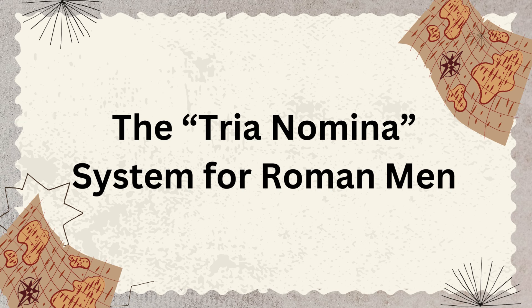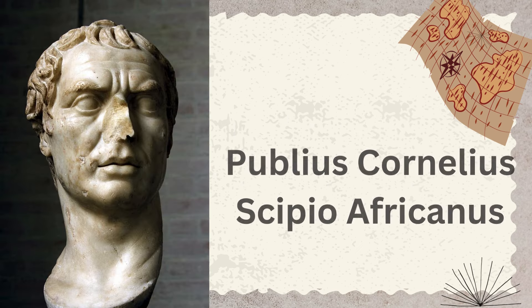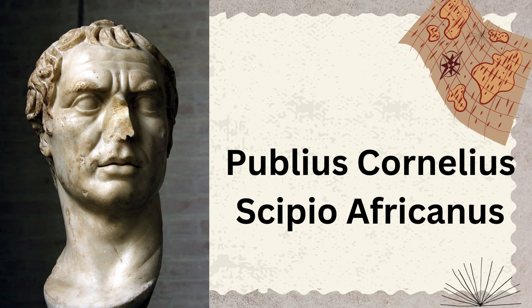Let's take that and look at a traditional Roman naming system, specifically for Roman men. This system is often called the tria nomina — the three name system. One of the most famous Romans that ever existed is Publius Cornelius Scipio Africanus. I know there are four names there — I'll explain all of them. You might know him as the famous Roman general who fought against Hannibal in the Second Punic War. He comes from a very famous family. Like us today, the Romans also had this three name system, and it seems to have developed pretty early on among the peoples of early Italy.